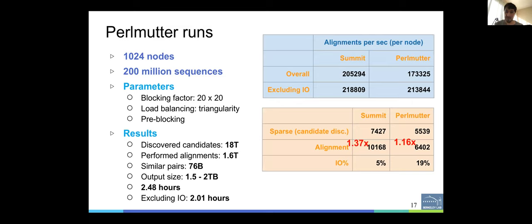On Perlmutter, we had similar performance compared to Summit, but the experiments were on a smaller scale, tested on 1k nodes and 200 million sequences. On the right here, you see alignments per second per node. When we exclude I/O, it's quite competitive between Summit and Perlmutter. And if Perlmutter was bigger, it was as big as Summit, I think we would also submit those results for the competition.